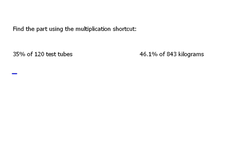So setting this up, I know I'm going to have to have a proportion, and we know we're going to have to put the percent over 100. So here we're finding 35% of 120 test tubes. My percentage is 35. That's always going to go on top here of the 100. The percent goes over 100.